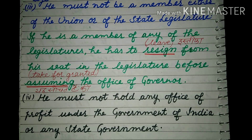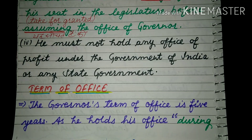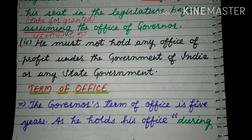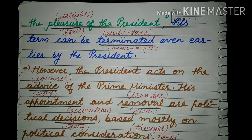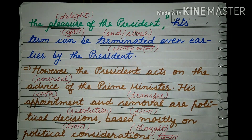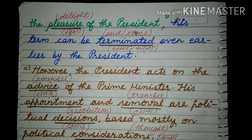Now term of office — अब उसकी office की क्या terms होती हैं, let us see. The Governor's term of office is five years — जो उसका कार्यकाल है Governor का वो पांच साल का है. As he holds his office during the pleasure of the President — कोई भी जो President के द्वारा उसको जो pleasure दी जाती है — his term can be terminated earlier by the President.